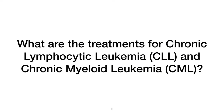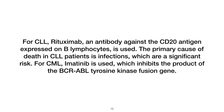What are the treatments for chronic lymphocytic leukemia (CLL) and chronic myeloid leukemia (CML)? For CLL, rituximab — an antibody against the CD20 antigen expressed on B lymphocytes — is used. The primary cause of death in CLL patients is infections. For CML, imatinib is used, which inhibits the product of the BCR-ABL tyrosine kinase fusion gene.